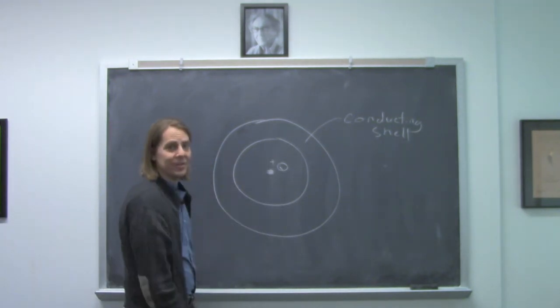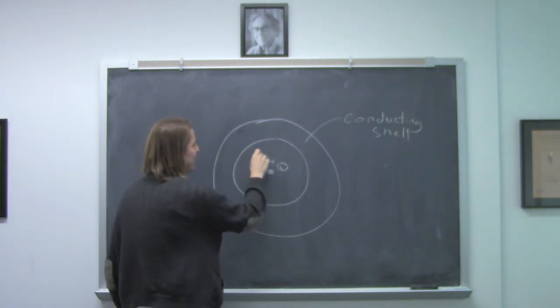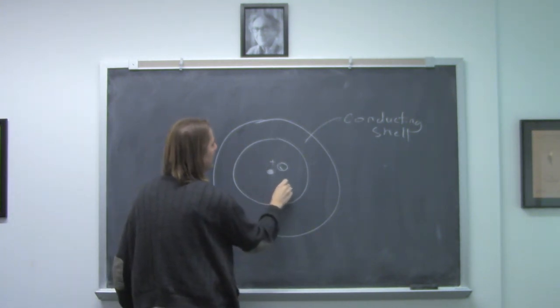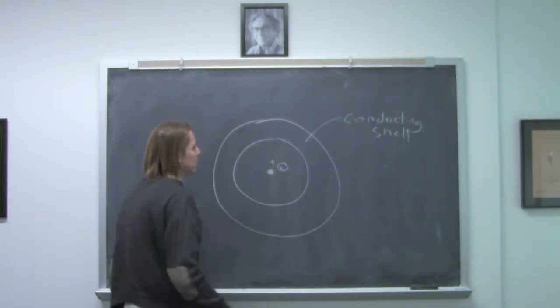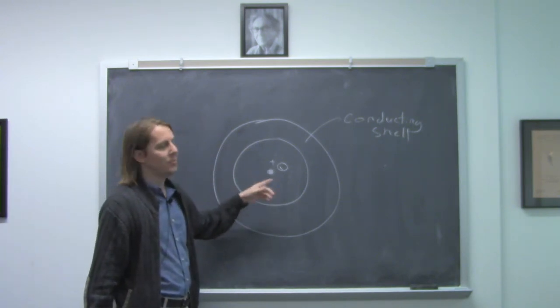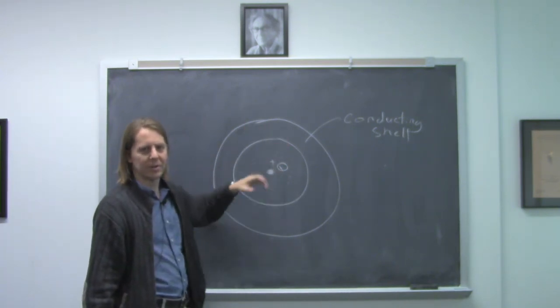Certainly, it's going to create a field inside the shell. And if we apply Gauss' law here, we would basically get Coulomb's law. We would find the field goes as 1 over R squared and decays, etc.